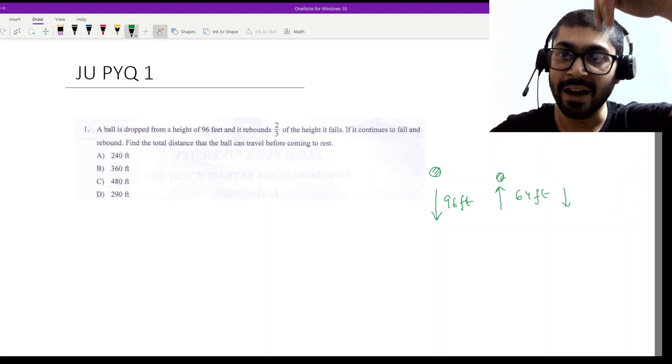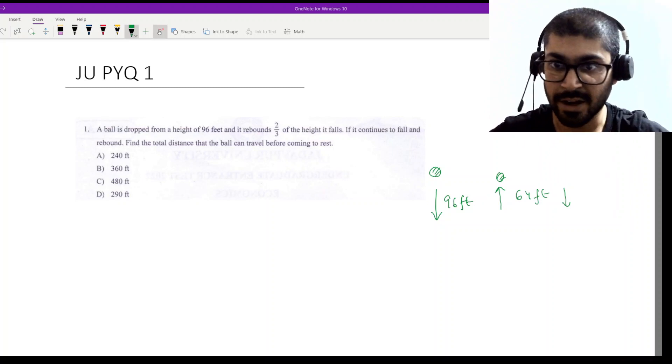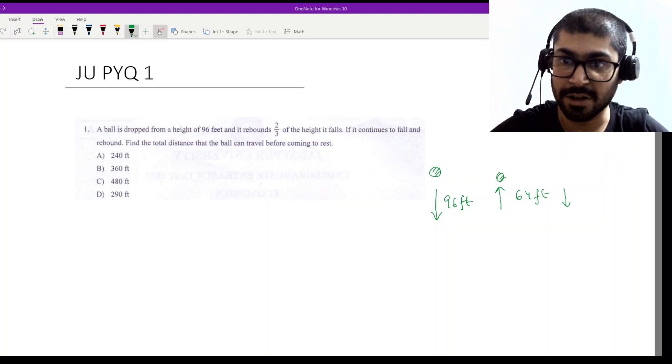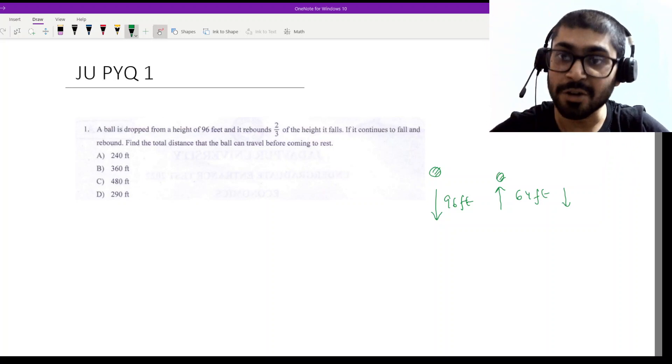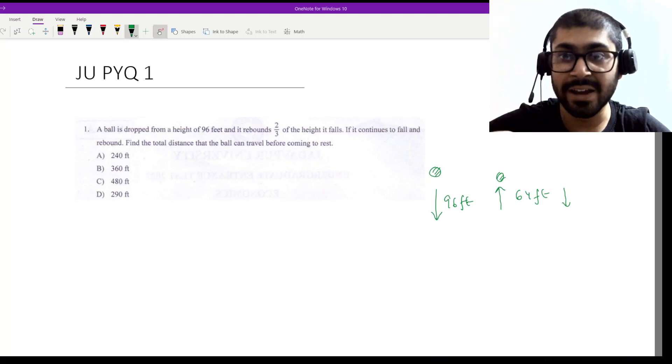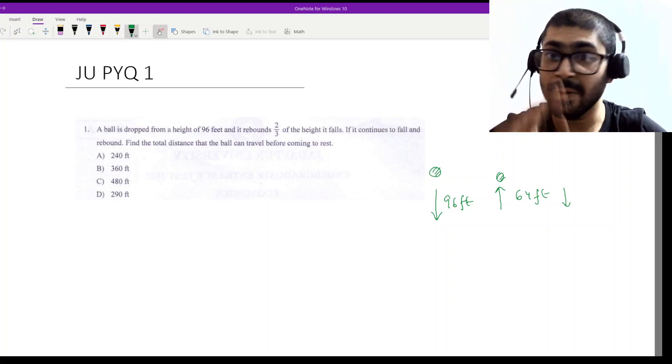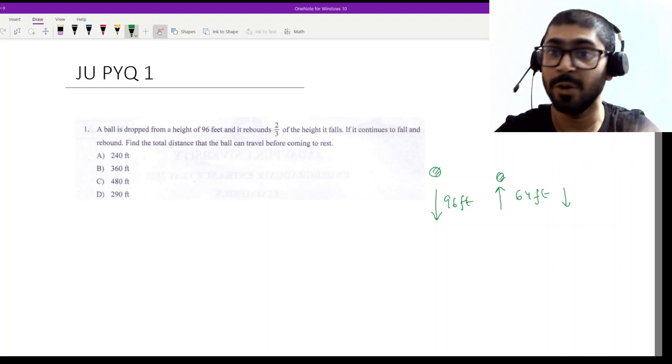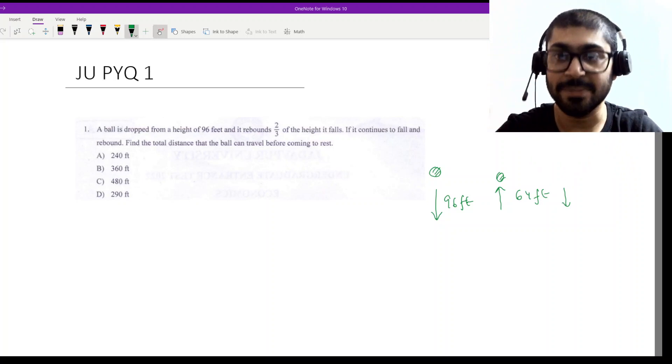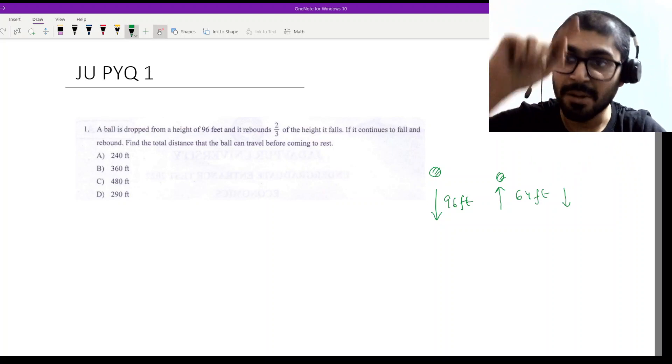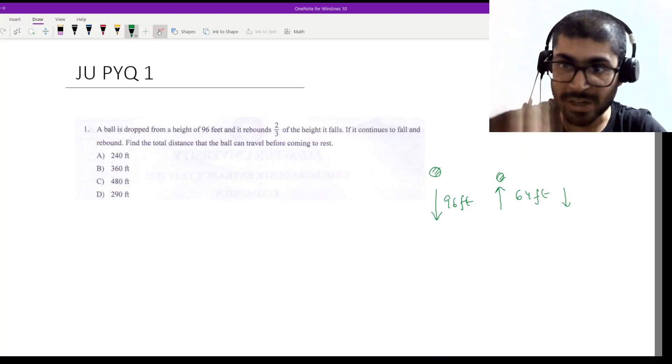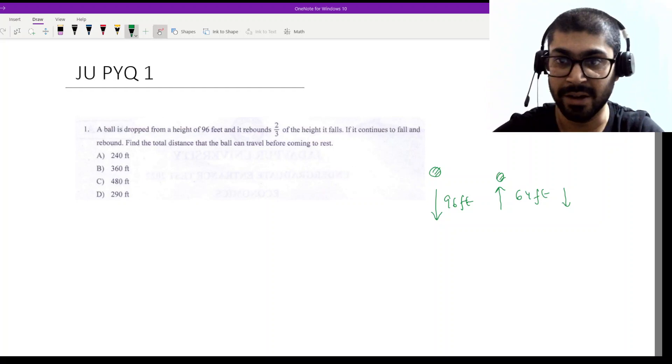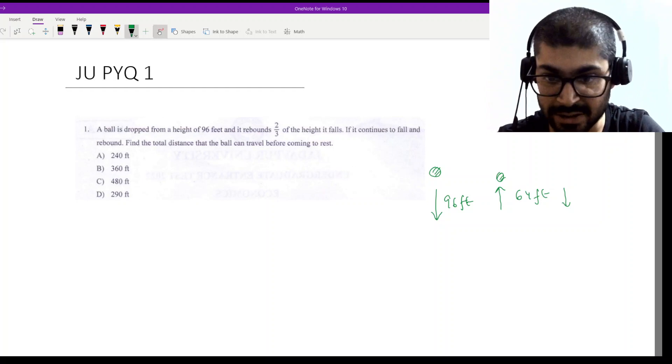When we are calculating the total distance that the ball travels: when going down 96 feet, that will be only one height calculating downwards. Then when going up 64 feet will count upwards, but now it will come down 64 feet. So both the coming as well as going has to be counted. We need to sum the entire geometric progression, but the distance is double counted.